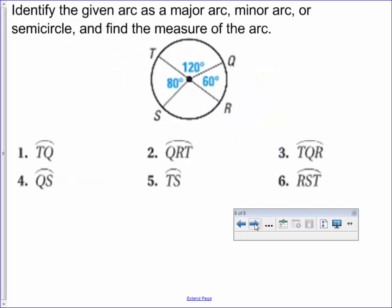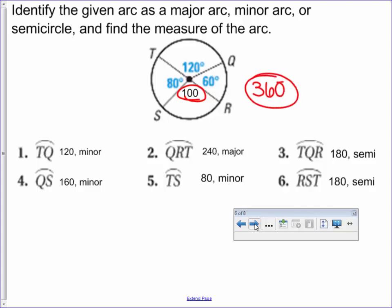Go ahead and do this one on your own. Identify if it's a major, a minor, a semicircle, and find the measures. You first had to find this 100 - all four angles equal 360. Now pay close attention to QS. You have to go in this direction because it's two letters, meaning it's a minor arc. If you went the other direction, that's more than 180, so it's a major arc. You have to go Q to S in the direction to give you 160.